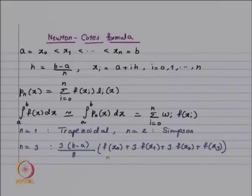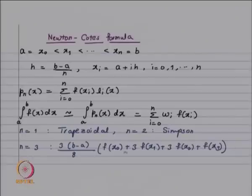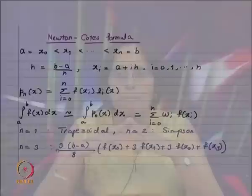For n=3, you get a formula of the form (b−a)·(3/8)·[f(x₀) + 3f(x₁) + 3f(x₂) + f(x₃)]. Note that if you add the coefficients 1, 3, 3, and 1, they add up to 8. You can choose a general n and find an approximate quadrature formula.